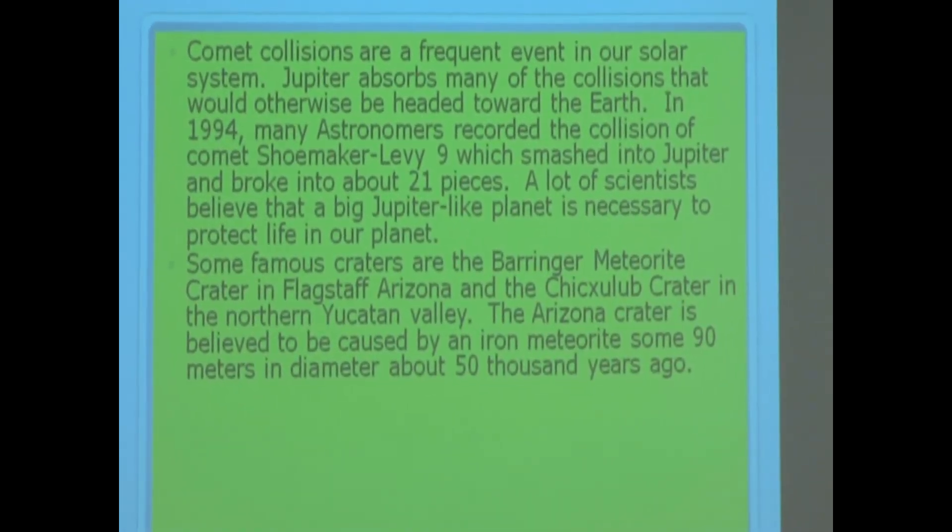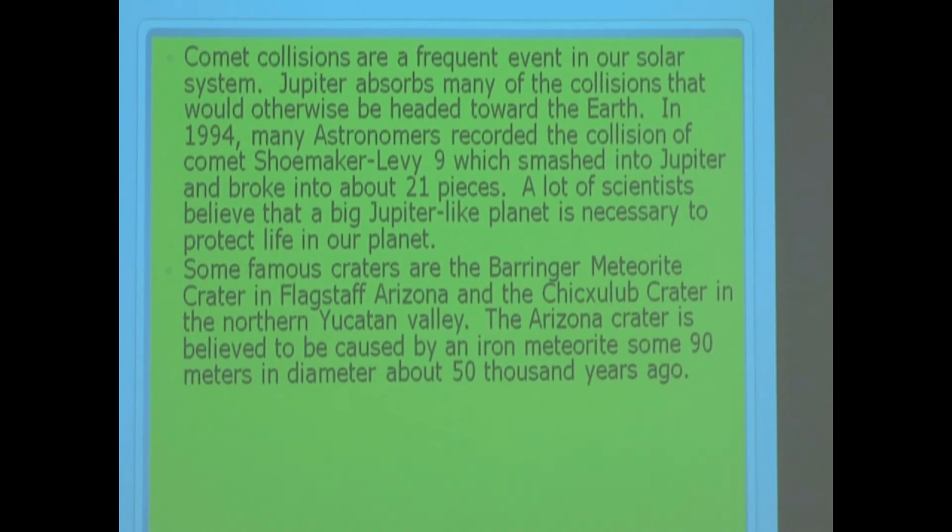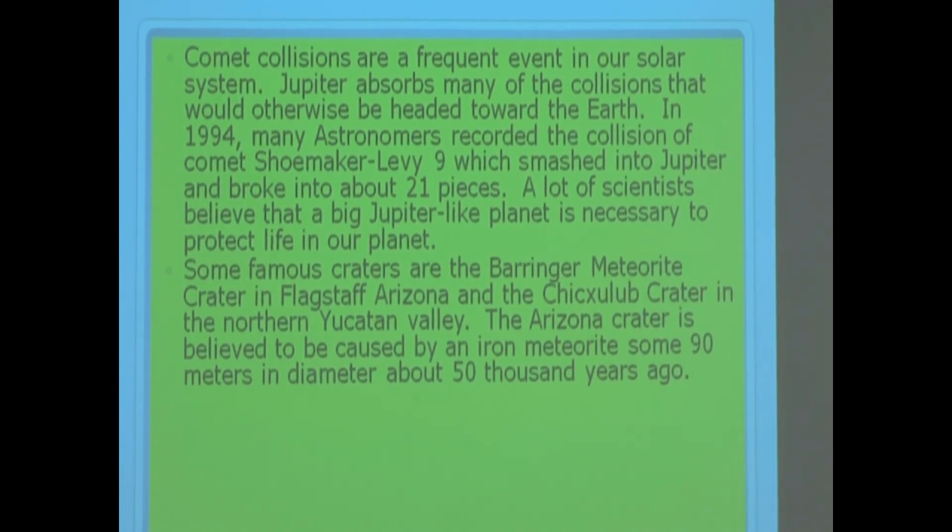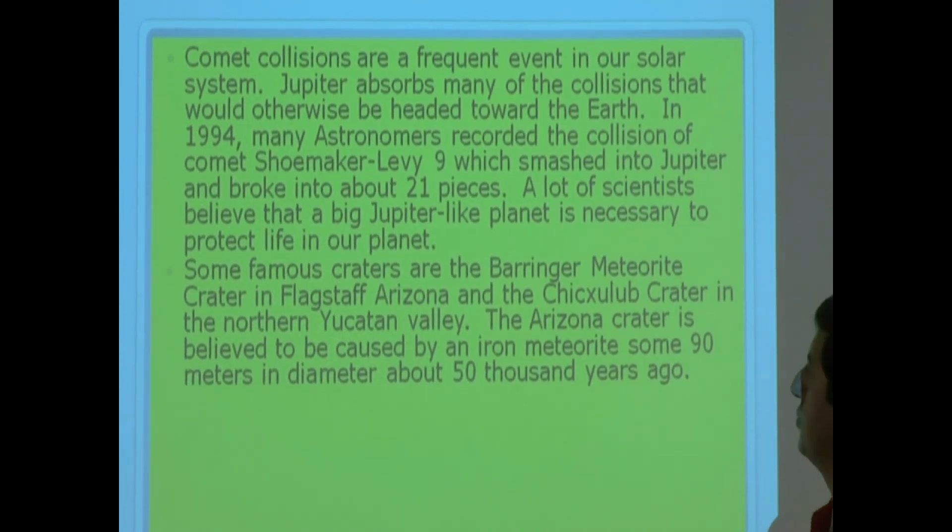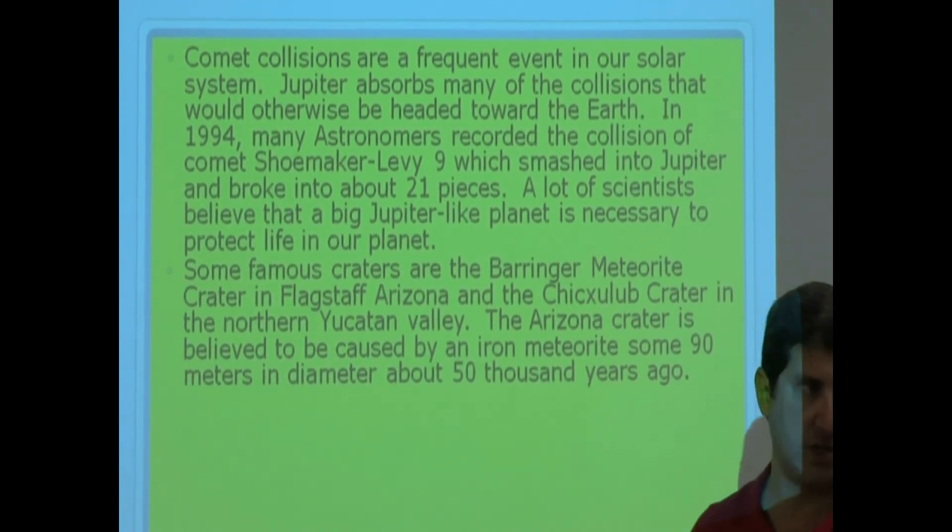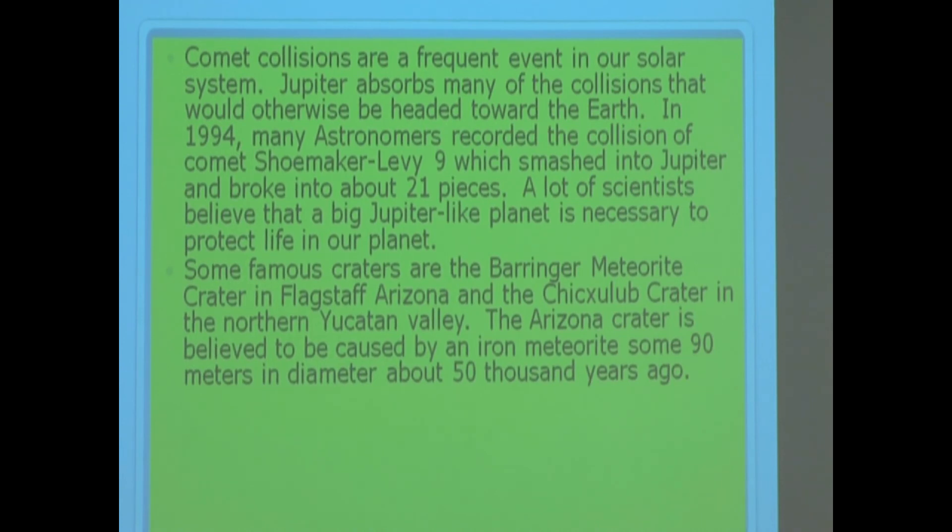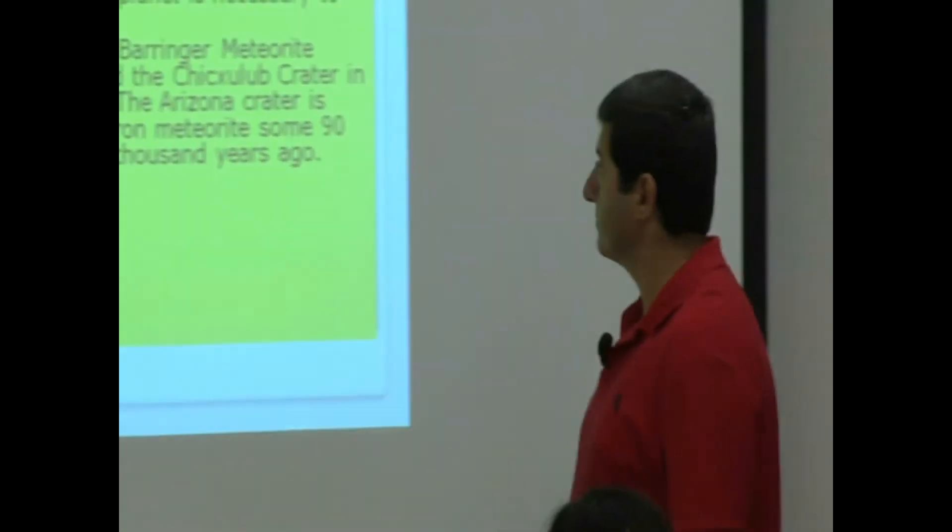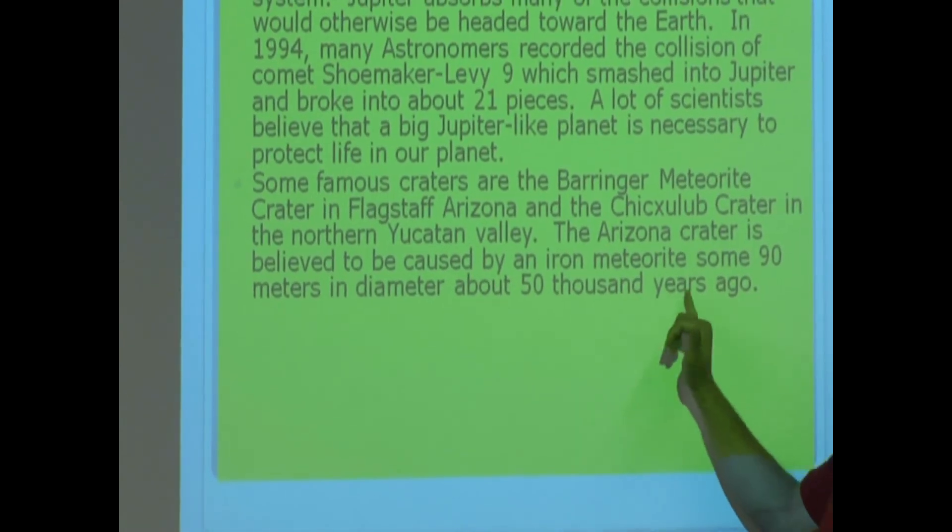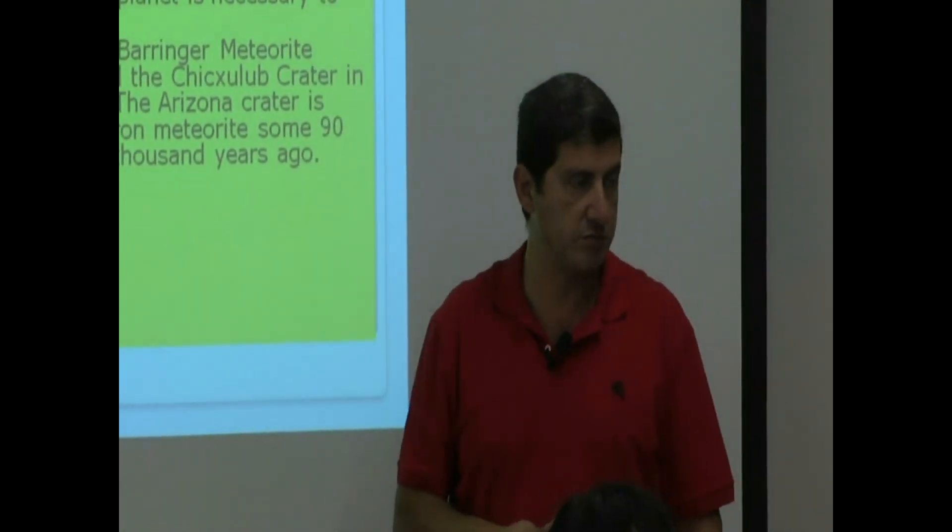Some famous craters are the Barringer meteorite crater in Flagstaff, Arizona. If you ever get a chance to go see that one, it's really, really big. Huge. There's a museum there, too. And the other one is the Chicxulub crater in the northern Yucatan Valley. The Arizona crater is believed to be caused by an iron meteorite some 90 meters in diameter, and it fell about 50,000 years ago into Arizona.